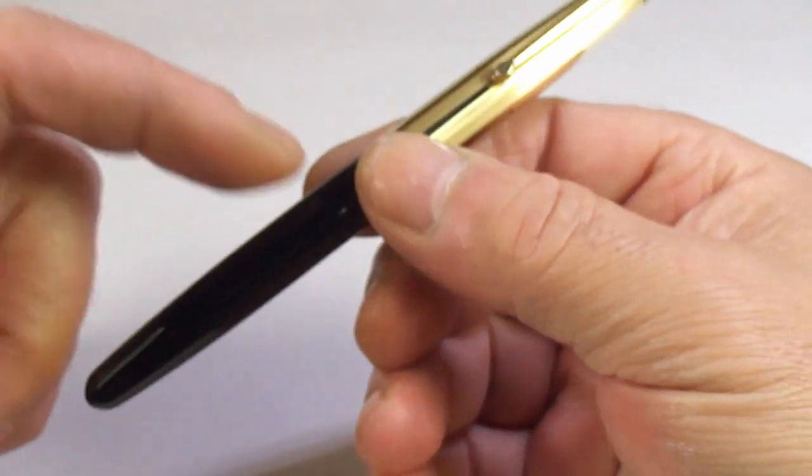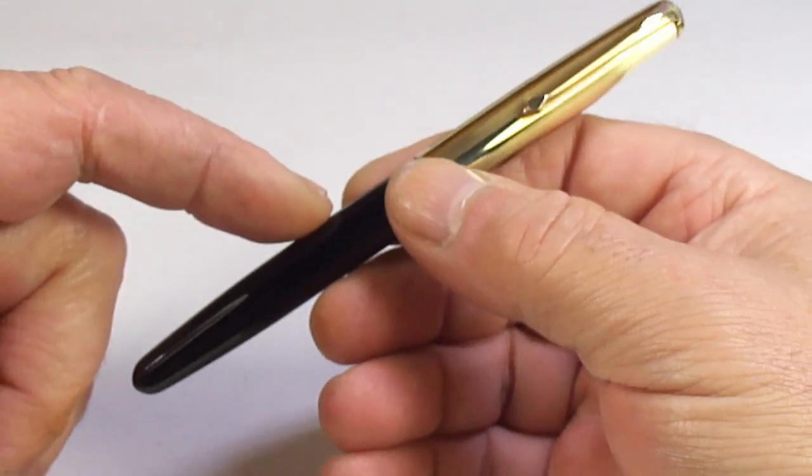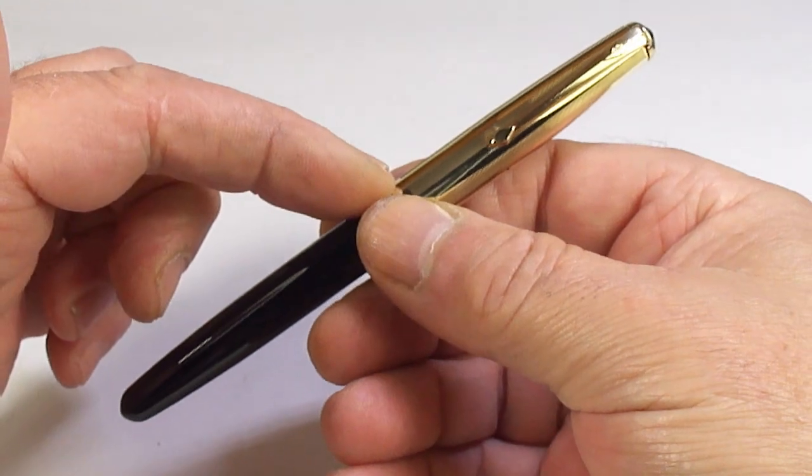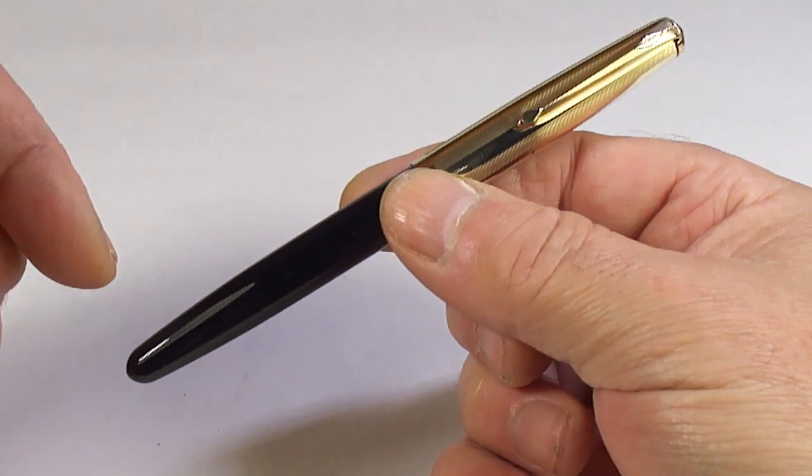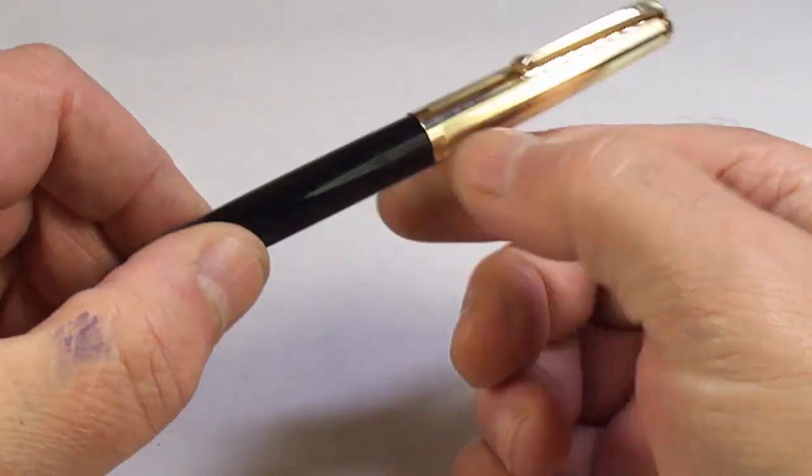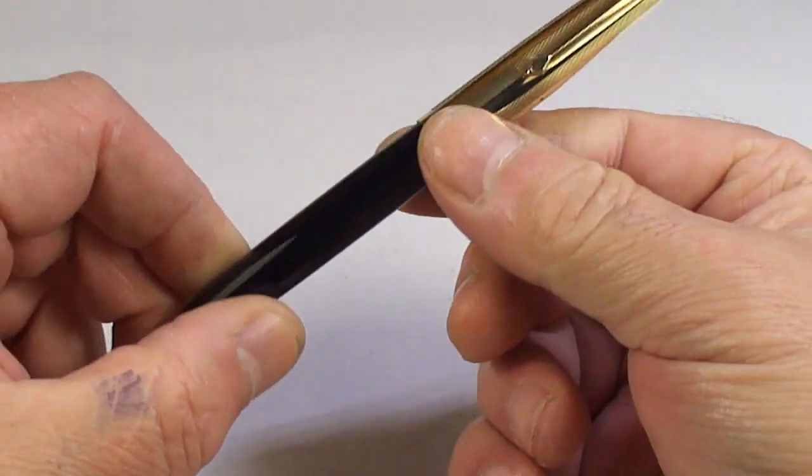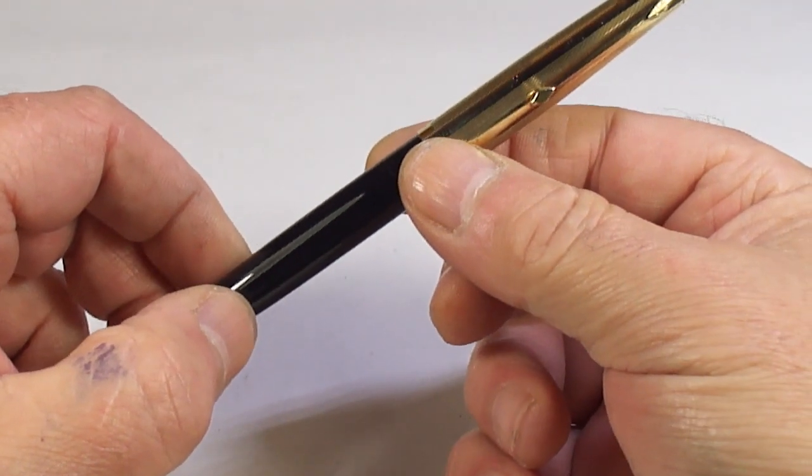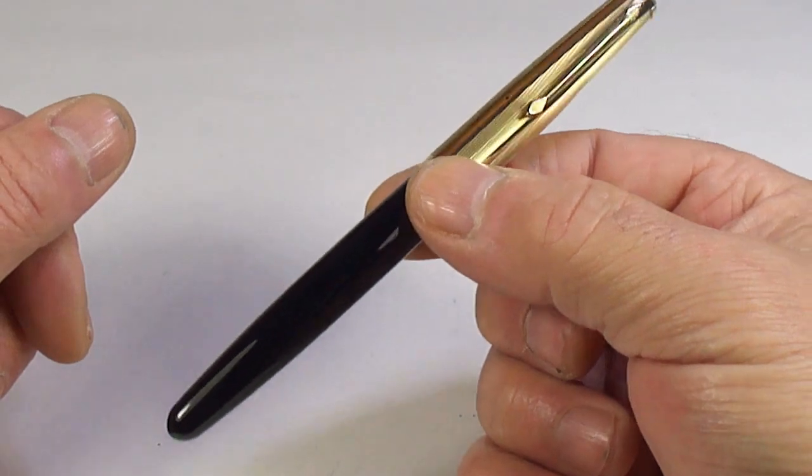As I say, a Conway 87, made in England. The size of the pen capped is 136 millimeters capped. Around the barrel diameter, it's a nice 11 millimeters in diameter.